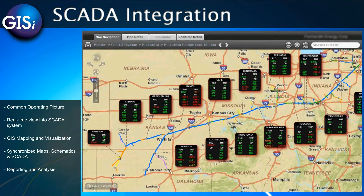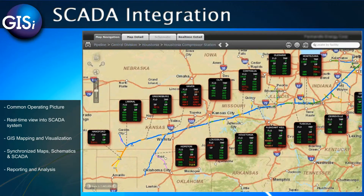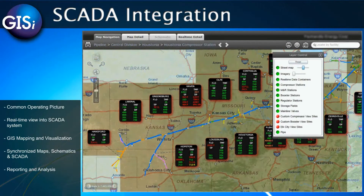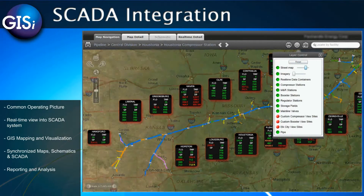I can also access an online print tool that will quickly print out a landscape or portrait report of my map. A layer control tool allows me to manage the information displayed on the map with advanced capabilities that further define how data is presented.